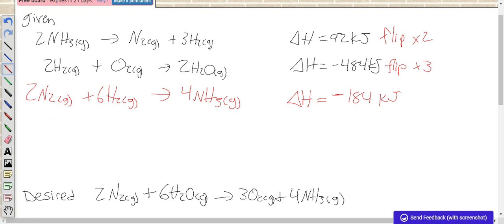So we'll end up with 6H2O gas making 3O2 gas plus 6H2 gas. Delta H changes sign since we flipped, and it was times three.